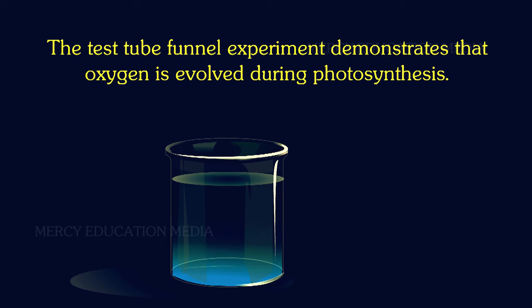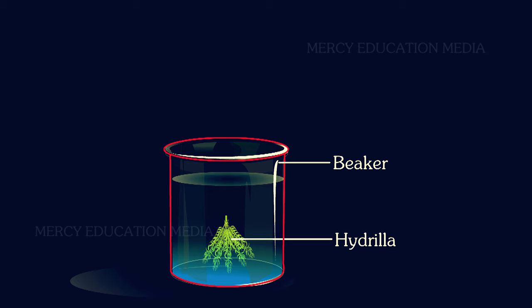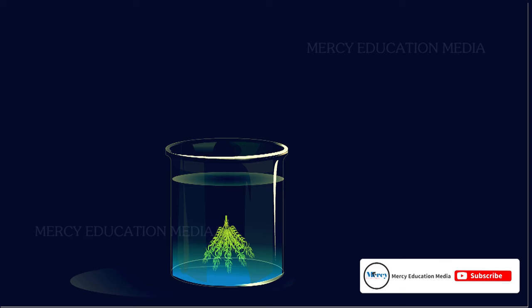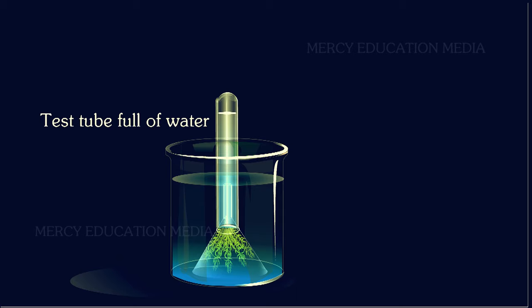A few branches of hydrilla are kept in a beaker containing pond water, in which a small amount of sodium bicarbonate is dissolved. The branches are covered with a glass funnel, and a test tube full of water is kept inverted over the stem of the funnel, as shown in the diagram.